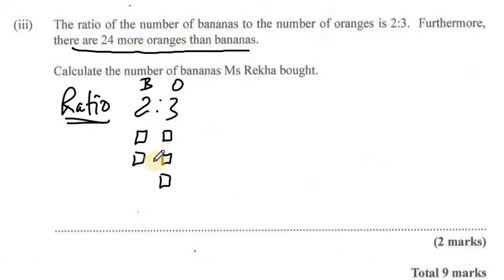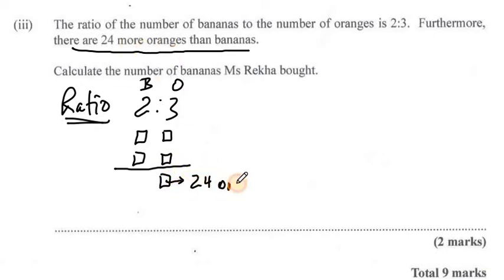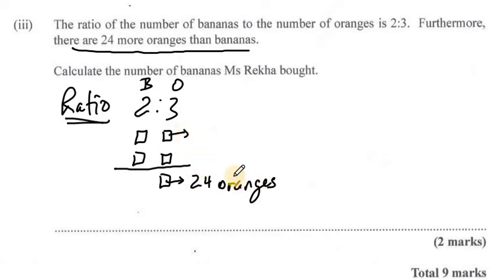Now if each part has the same amount, then up to this point they have the same amount. But in this extra box, we have 24 more oranges. If in this extra box or this extra part we have 24 more oranges, then it means therefore that one part is equal to 24.